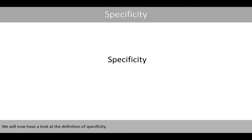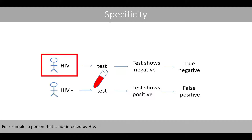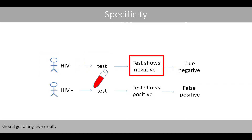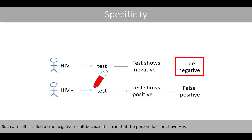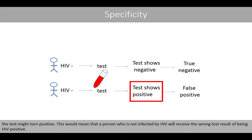We will now have a look at the definition of specificity. Specificity tells how often the test turns negative for people who do not have the disease. For example, a person that is not infected by HIV who takes the test should get a negative result. Such a result is called a true negative result because it is true that the person does not have HIV. However, it might happen that even though a person is not infected by HIV, the test might turn positive.